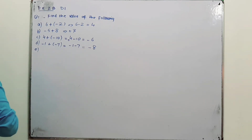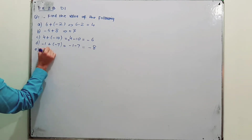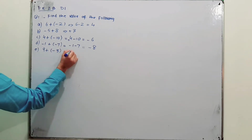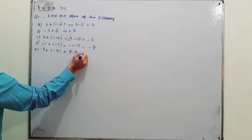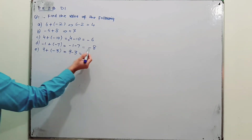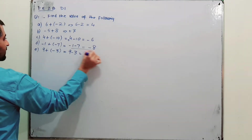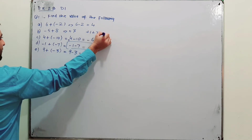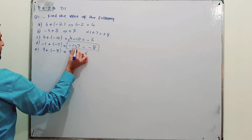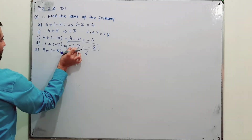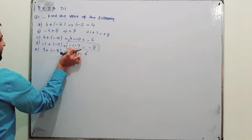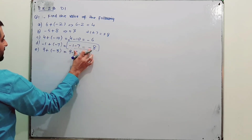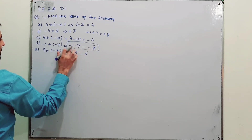Part E: 9 plus (minus 3). That gives 9 minus 3, which is 6. To explain again: when signs are the same, like plus 1 plus 7 giving plus 8, or minus 1 minus 7 giving minus 8 — you add the numbers and use the shared sign.